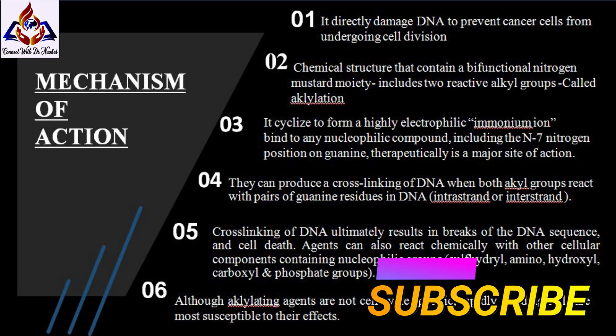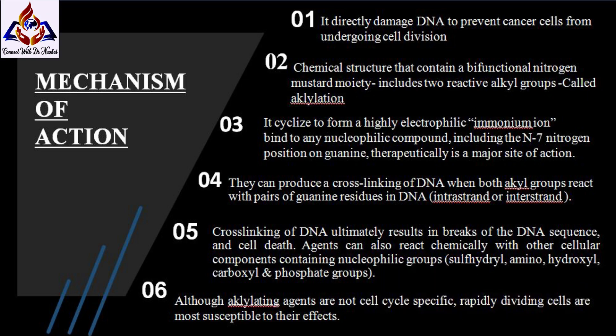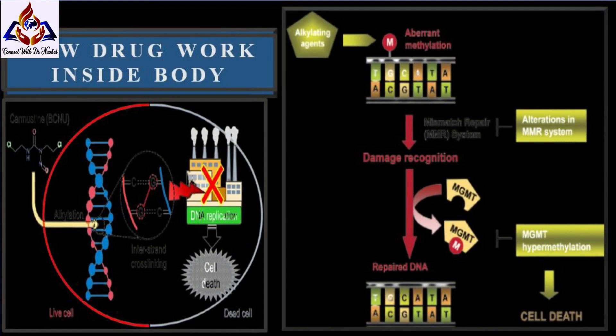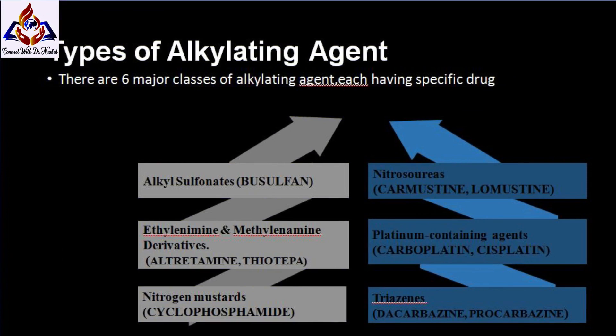Therapeutically, the N7 position on guanine is a major site of action. Alkylating agents can produce cross-linking of DNA when both alkyl groups react with pairs of guanine residues in DNA. Cross-linking of DNA ultimately results in breaks of the DNA sequence and cell death. Although alkylating agents are not cell cycle specific, rapidly dividing cells are more susceptible to their effects. In the diagram, alkylating agents act directly on DNA causing cross-linking of DNA strands, abnormal base pairing, or DNA strand breaks, thus preventing the cell from dividing.